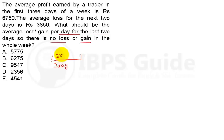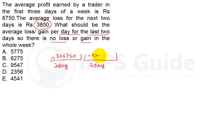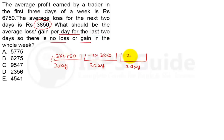For the next two days, the average loss is 3850, so the total loss is 2 × 3850, expressed in negative format because there is a loss. For the last two days, we don't know the value — it could be a loss or a gain — but the total profit or loss will be 2 × x. He says there is no loss or no gain overall, so if we add these three terms, the total equals zero: 3 × 6750 minus 2 × 3850 plus 2x = 0.